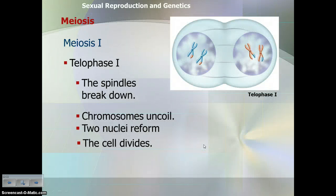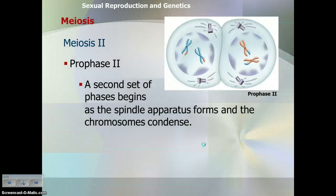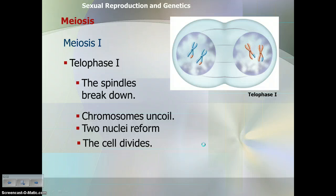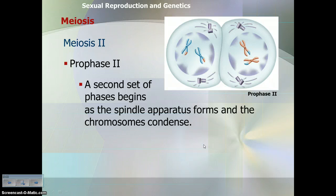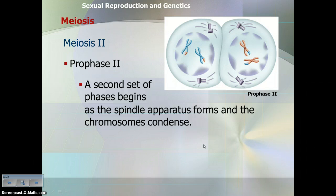In telophase one, similar to mitosis, the nucleus reforms and the chromosomes uncoil back into chromatin. Then some cells go through cytokinesis and some don't, depending on the cell type. Some cells go straight into prophase two — notice that we skip interphase. The DNA only gets duplicated once before meiosis and the cell divides twice. Duplicate the DNA once, divide the cell twice — that way you end up with cells that have half the number of chromosomes.